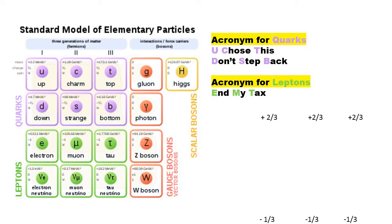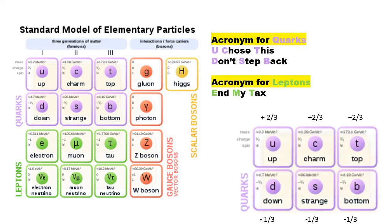The thing about acronyms is they make you remember for a really long time — I still remember the planet acronym and the electromagnetic wave acronym just because they're easier to remember. For leptons: E for electron, M for muon, T for tau, and then electron neutrino, muon neutrino, and tau neutrino. One more important thing about quarks: the first row — up, charm, and top — has a charge of positive 2 over 3, and the second row — down, strange, and bottom — has a charge of negative 1 over 3. These properties of quarks are really important because many questions will test your understanding of them.